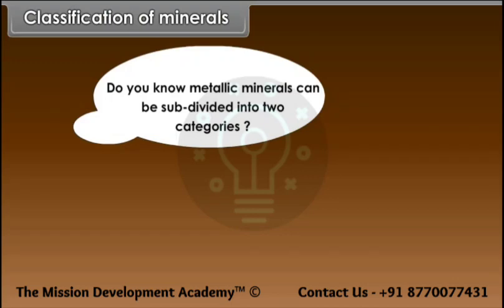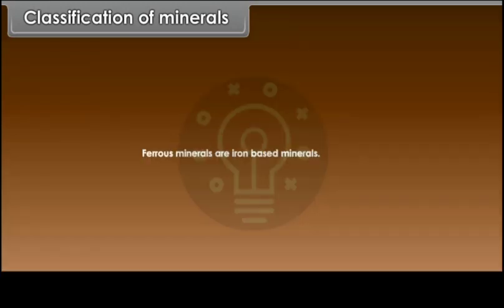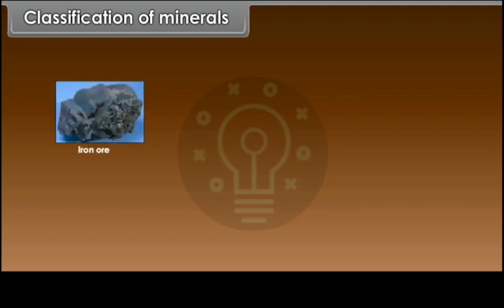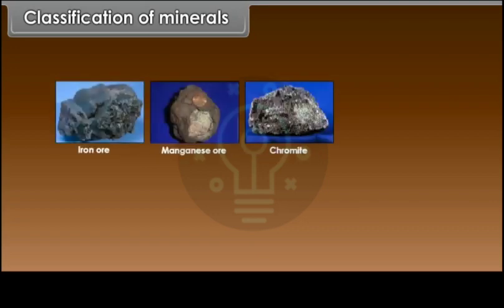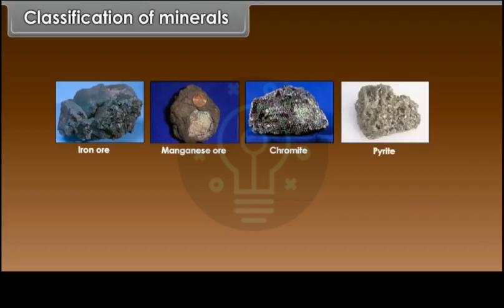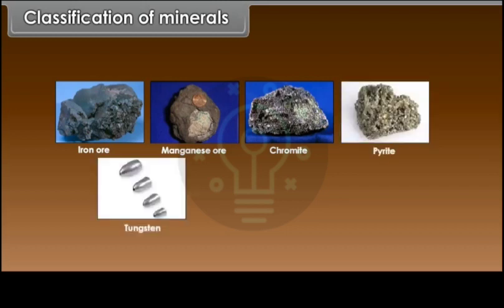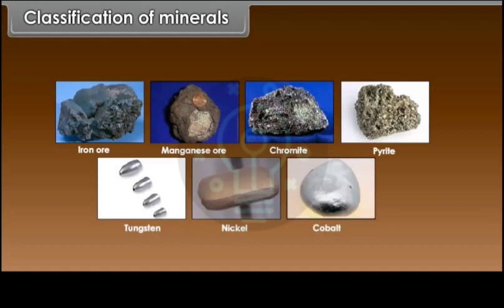Metallic minerals can be subdivided into two categories: ferrous and non-ferrous minerals. Ferrous minerals are iron-based minerals. Examples include iron ore, manganese ore, chromite, pyrite, tungsten, nickel and cobalt.